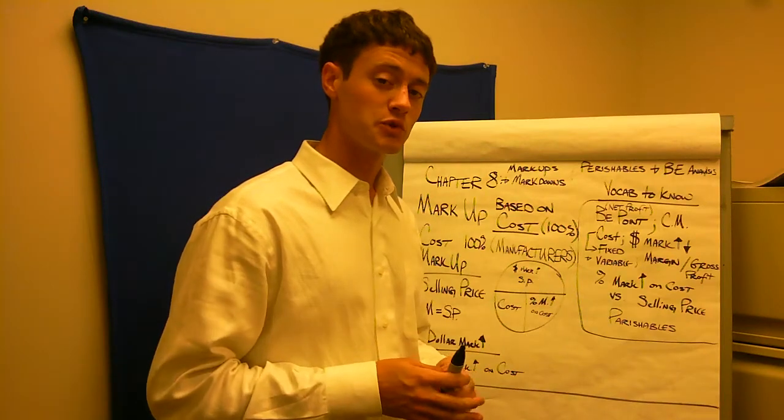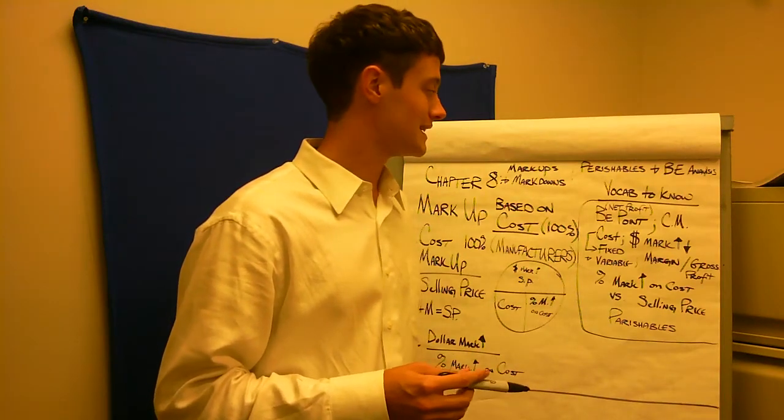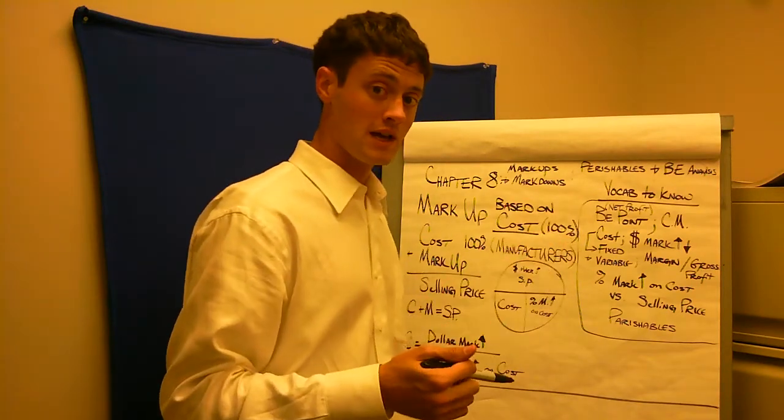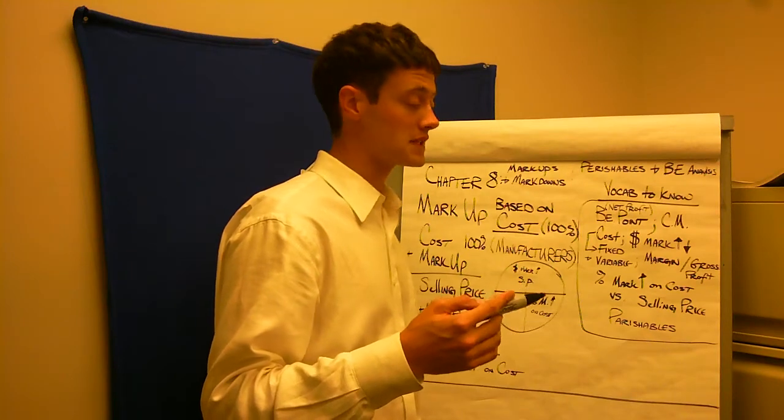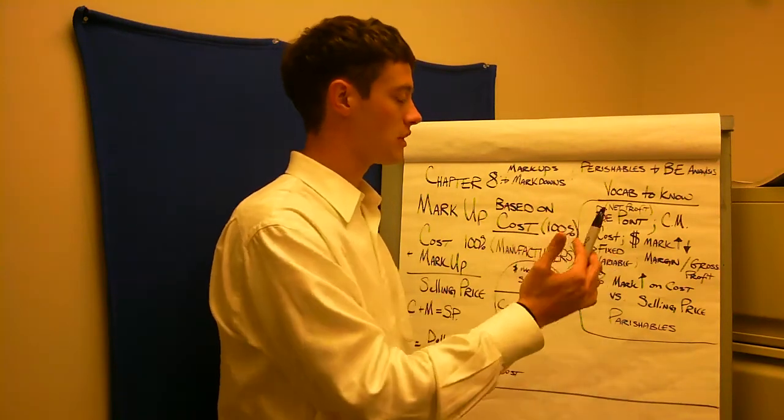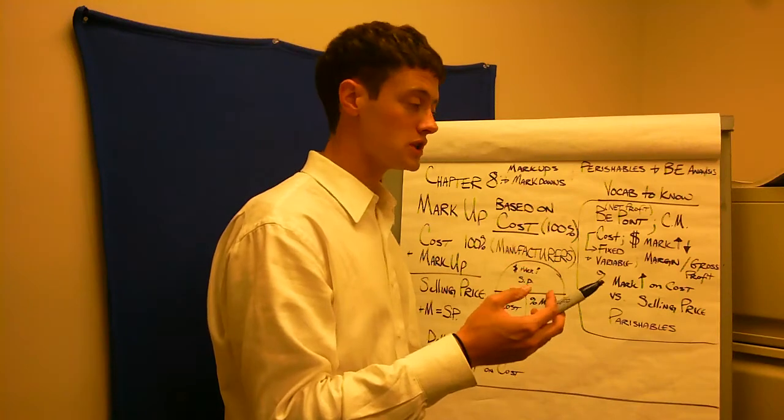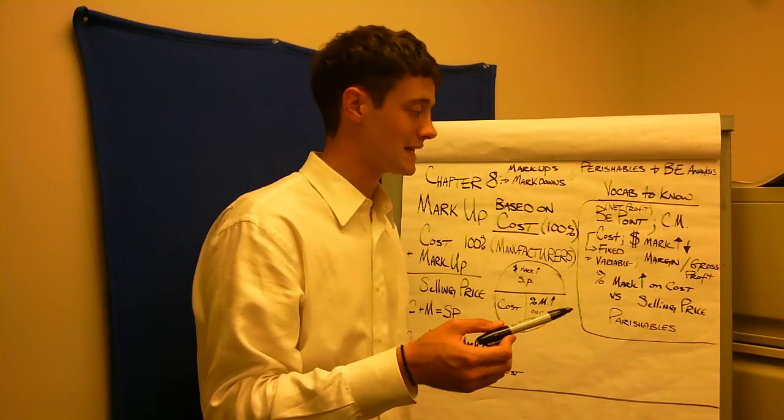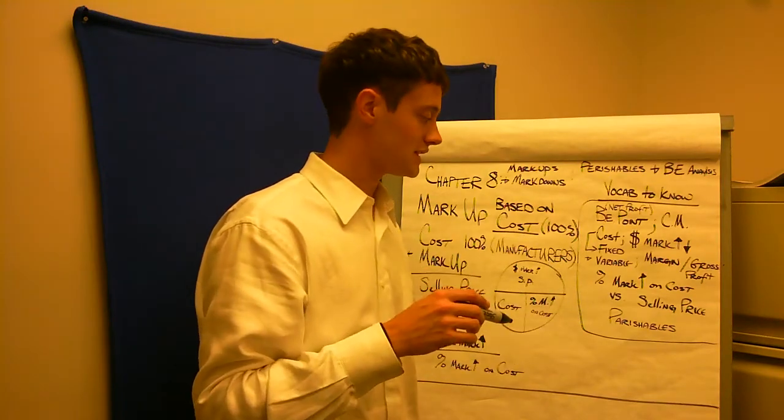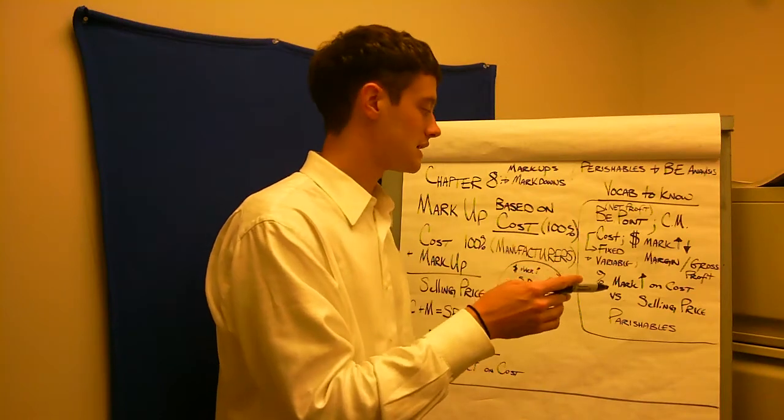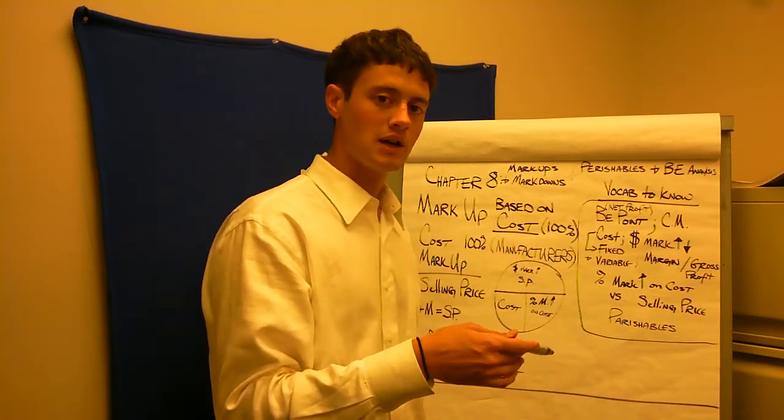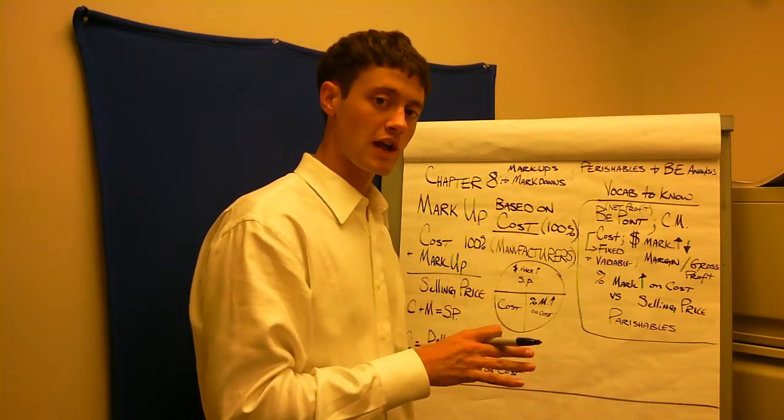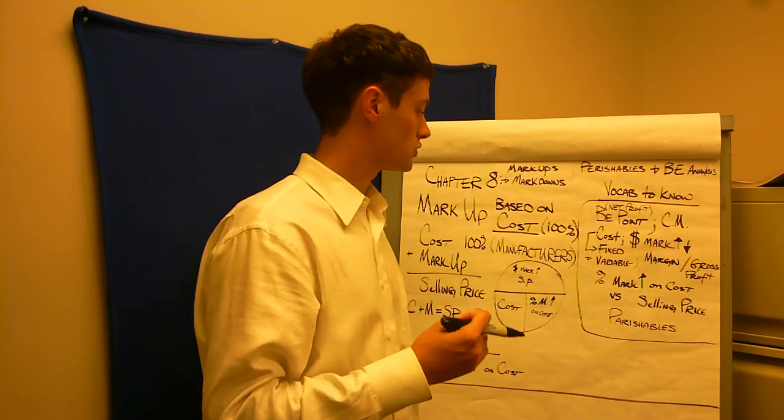So before we get started, in your reading you should be paying attention to the vocab. Some of the words that are coming up that you need to know and you'll be quizzed on or on the exam are your break-even point, your net profit, your contribution margin, your fixed cost, your variable costs, your dollar markup and markdown, your margin or your gross profit, as well as percent markup on cost versus your percent markup on selling price, as well as what are perishable items. So that's the vocab that you'll need to know and you should know because you're doing the reading.